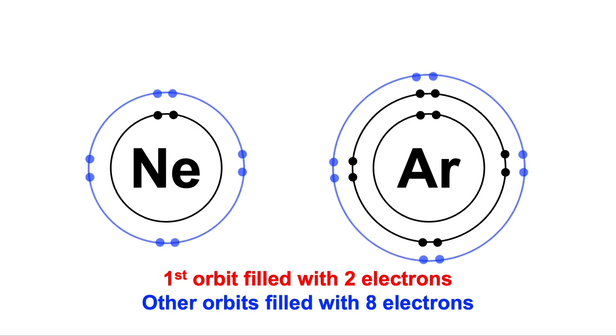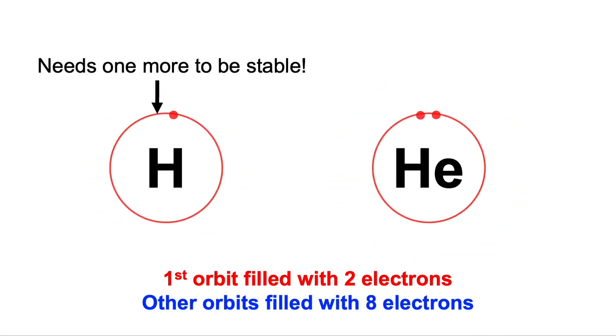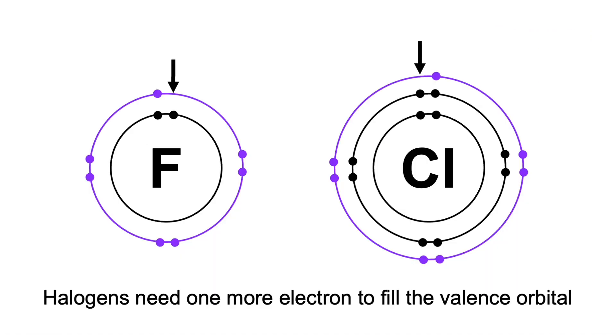We fill the outer shell with electrons. Satisfy with eight unless you're hydrogen or helium. Halogens wanna get them some. Seven out of eight, can't wait to take another one.